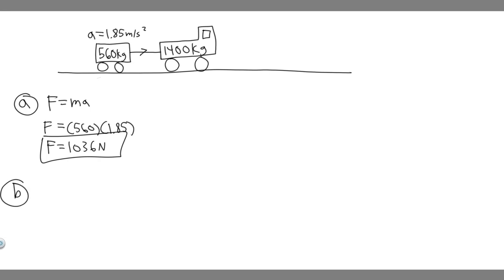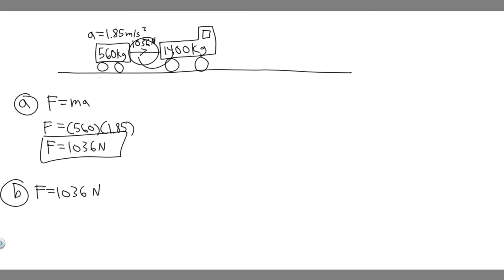For Part B, we're looking at the force the trailer exerts on the car. The net force on the trailer has only one force acting on it — 1,036 Newtons — and we know this tension force equals that. Because the car is pulling the trailer, this is the only force, and it is the force the trailer exerts back on the car. So the answers to Part A and Part B are the same: 1,036 Newtons.